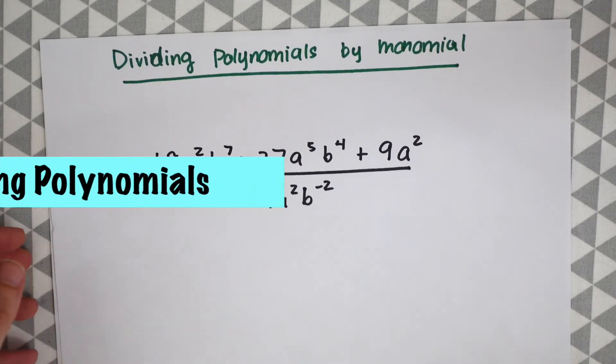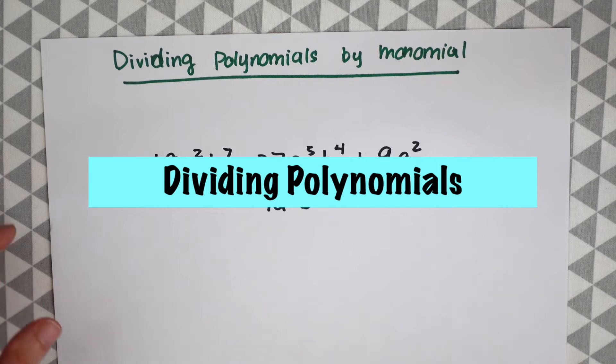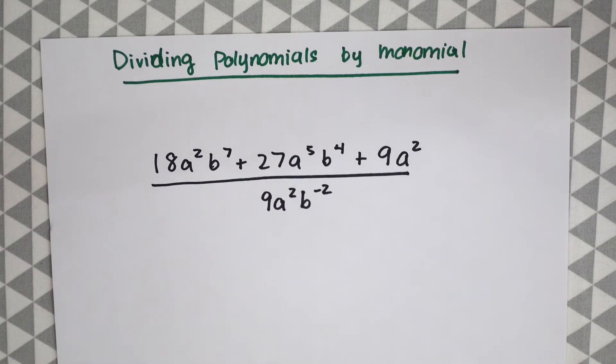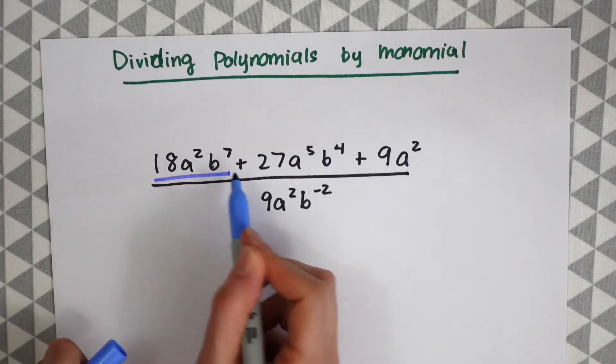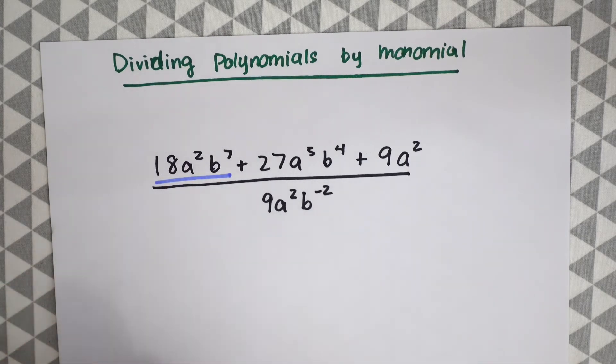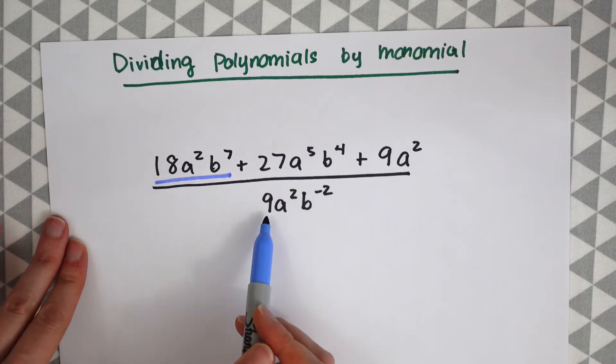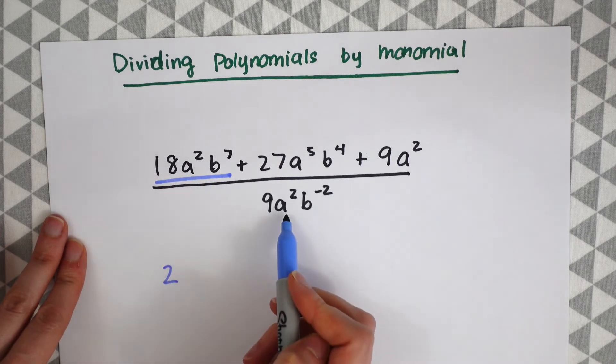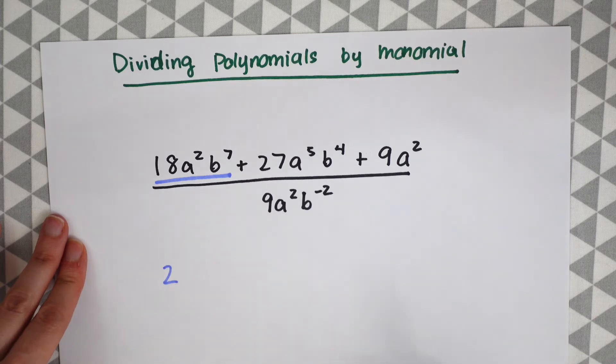So this is our last question for dividing polynomials. In this case we're dividing a polynomial by a monomial. So we're just going to do this one step at a time. So we're just going to focus on this guy right here first. So one step at a time. Let's do the whole number first. 18 divided by 9 is just 2. A squared divided by a squared is 1. They just cancel each other out.